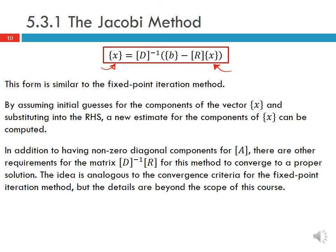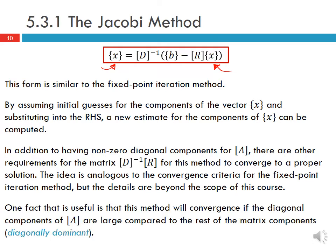For this method to work, the original matrix A must have non-zero diagonal components. In addition, there are other requirements on the matrix D-inverse R for the method to converge to a proper solution, analogous to the convergence criteria for fixed point iteration — though the details are beyond the scope of this course. One useful fact is that the method will converge if the diagonal components of A are large compared to the rest of the matrix components, which we call diagonally dominant. We'll see more about this when discussing convergence of both the Jacobi and Gauss-Seidel methods.